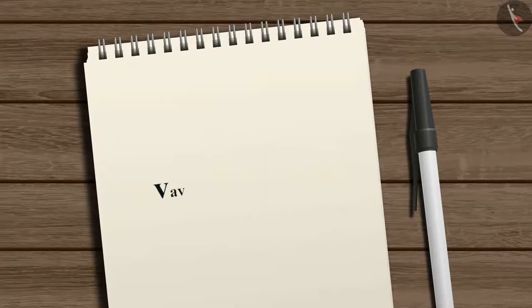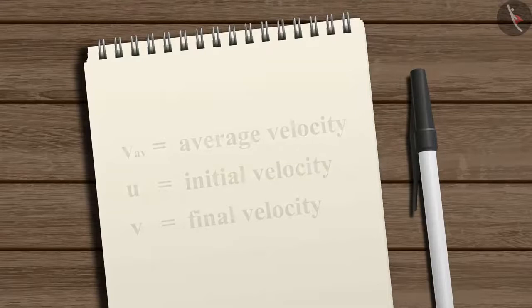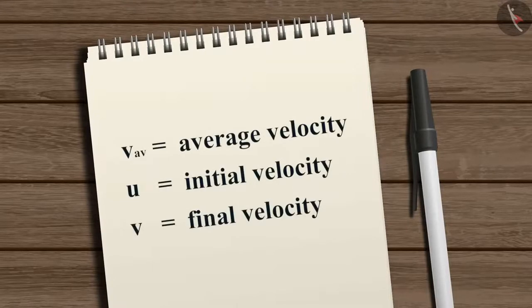Mathematically, V average is equal to U plus V, the whole divided by 2, where V average is the average velocity, U is the initial velocity, and V is the final velocity of the object.